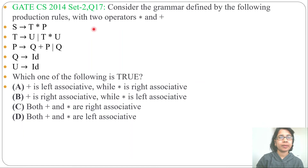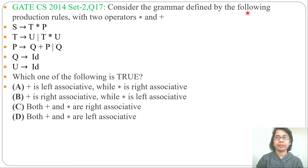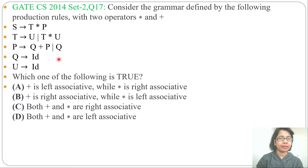Let's solve one previous question on parsing. This question was asked in GATE CS 2014, Set 2, question number 17. Consider the grammar defined by the following production rules with two operators: multiplication and plus. Which one of the following is true?